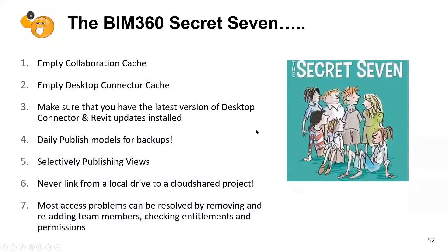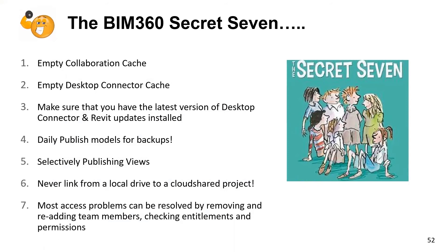I call these the BIM 360 Secret Seven — about 90% of BIM 360 issues can be solved with these steps: empty the collaboration cache and Desktop Connector cache, make sure you have the latest versions installed, publish daily if possible, selectively publish views, never link from a local drive to a cloud shared project (always upload the file to BIM 360 first), and for access problems, remove and re-add team members, check entitlements, and check permissions.